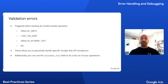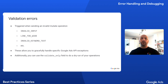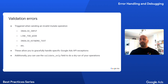In these cases, the Google Ads API will respond with a specific error code indicating the cause of the validation failure, which you can then use to sanitize your inputs or to display a meaningful error message to your users and direct them to fix their input.